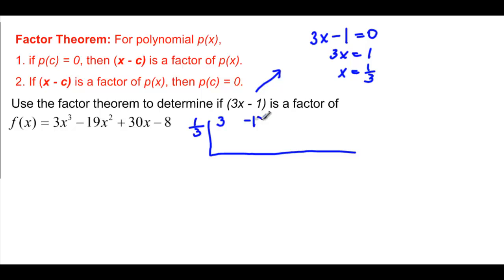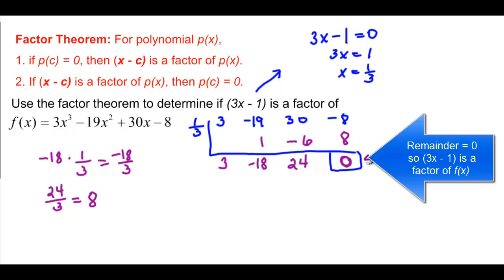So 1 third goes on the outside. 3, negative 19, positive 30, negative 8. And if this is really a factor, this should be a 0 down here. But let's multiply. Bring down the 3, multiply by 1 third. 1 third times 3 is just 1. And now you're going to have negative 19 plus 1 is negative 18. And then negative 18 times 1 over 3, you could think of it as negative 18 over 3, if you haven't done fractions for a while. Negative 18 over 3 is negative 6. And negative 6 plus 30 would be a positive 24. And 24 over 3 is going to give me 8, positive 8 here, remainder 0. So we got what we thought.